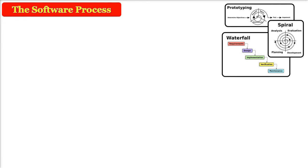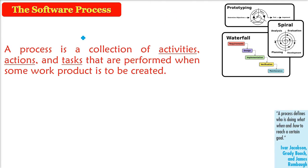The software process, or software processes, is not one thing — it is a collection of certain activities. Different teams perform different activities, actions, and tasks. Because you are creating some work product, you have to do certain activities, certain actions and tasks, and you combine them — that will be called a process, which is nothing but a software process.